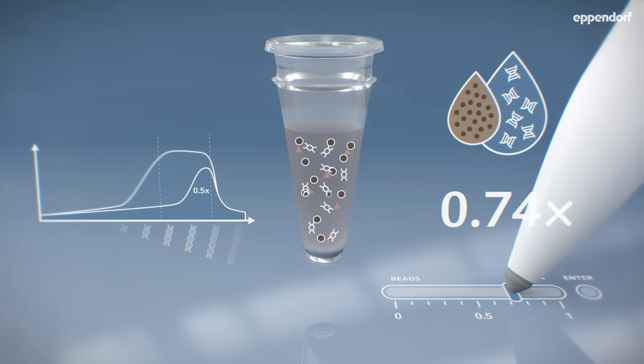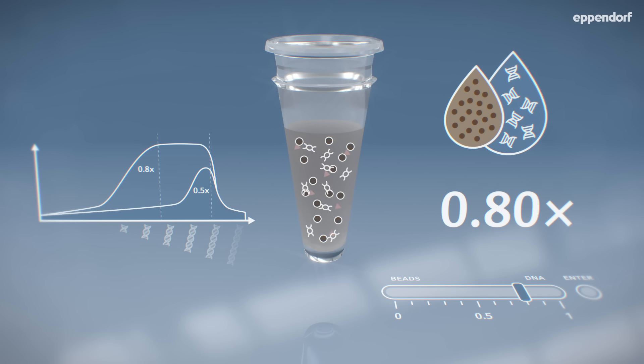When moving to a 0.8x ratio of beads to DNA, there is an increase in the number of smaller fragments selected for. This can also include unwanted tiny fragments such as primer dimers.